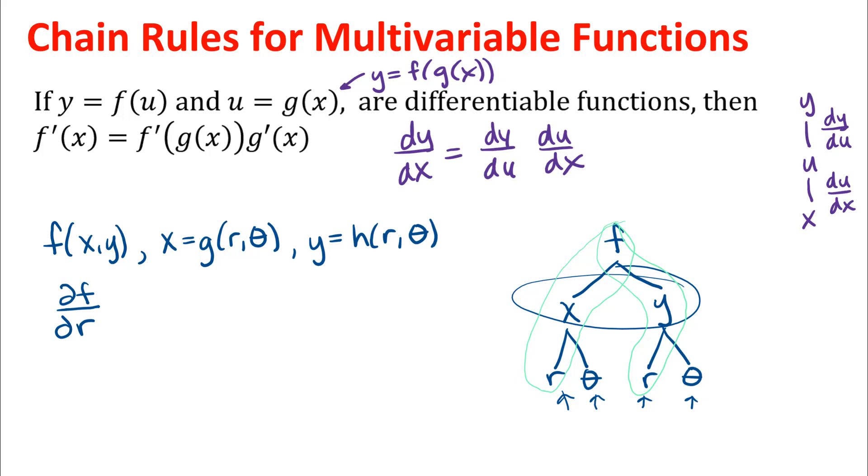Partial derivative of f with respect to r would be the partial derivative of f with respect to x, I'm just differentiating down this first branch, times ∂x/∂r. And so that would give me the contribution to this partial derivative that kind of comes through the x, and then I need to think about the contribution of that derivative that comes from the y. And then the other question is, how are those related to each other?